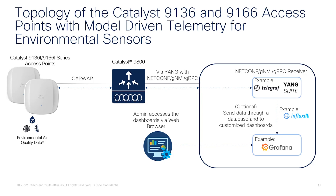Here we have our 9136 or 9166 on the left with their built-in environmental sensors gathering environmental air quality data. We have our controller configuring the access point and getting that information through CAPWAP, then sending it via YANG with NETCONF, gNMI, or gRPC to a receiver. That data can then be sent through a database to a dashboard portal such as Grafana, where an admin can access it via web browser.